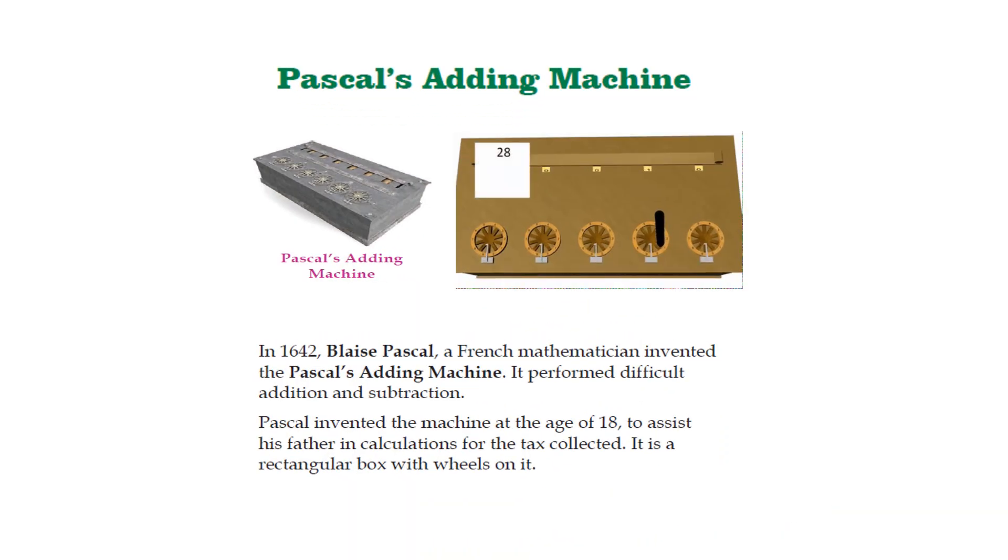Pascal's Adding Machine. Back in 1642, Blaise Pascal, a French mathematician, invented the Pascal's Adding Machine. It performed difficult addition and subtraction. Pascal invented the machine at the age of 18 to assist his father in calculations for the tax collector.